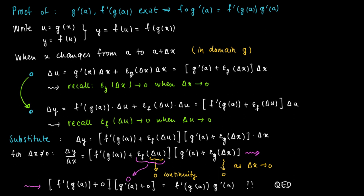But when this limit exists, it's also y'(a). It's the derivative of the function y evaluated in a. And since y is the composite function f∘g, then we see that the derivative of the composite function f∘g evaluated in a is the product of f'(g(a)) and g'(a).